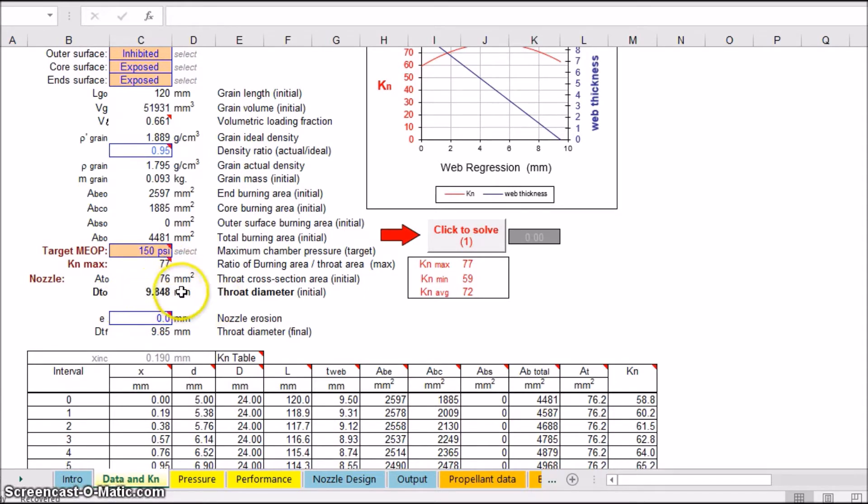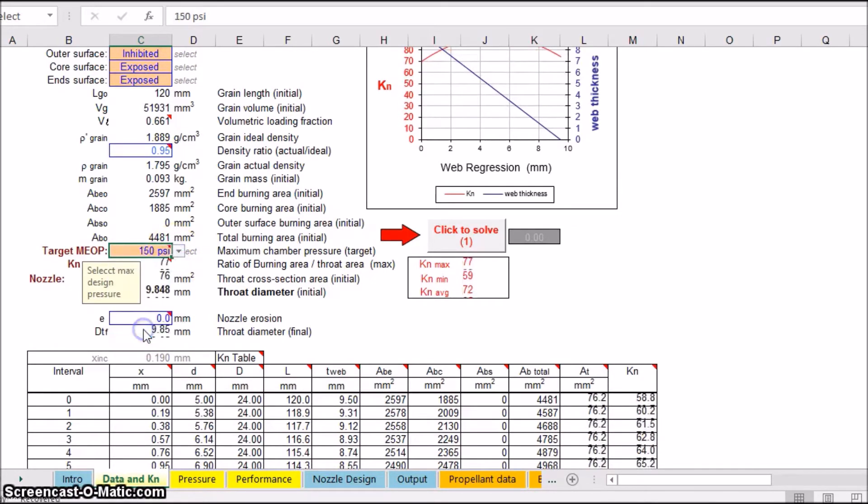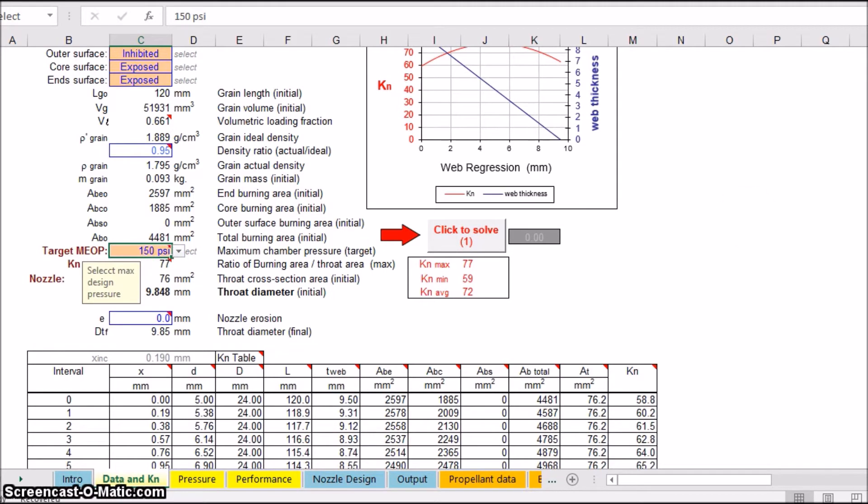That's determined by your throat diameter, which mine was basically 10 millimeters, a little bit less than that. So in this software here, you actually change your desired pressure, and it automatically changes your throat diameter. So preferably the higher pressure, you get better performance. But I had already created my throat diameter. I didn't realize I should have made it maybe a little bit smaller, but that's alright. I still had good performance.